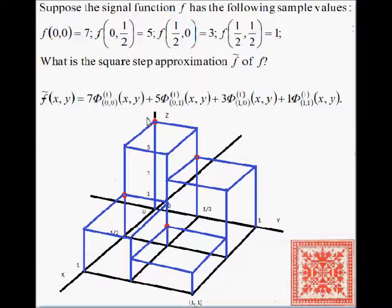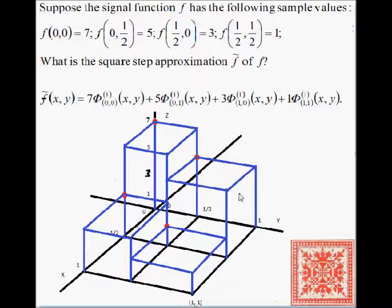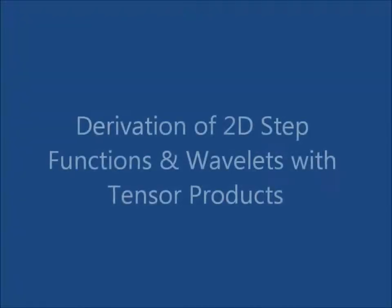The square step approximation f-tilde equals 7 times phi superscript 1,0,0 — seven times the first basic scalar in the top left — plus 5 times the height of the second basic scalar, plus 3 times the height of the third basic scalar in the bottom left, and 1 times the height of the fourth basic scalar.